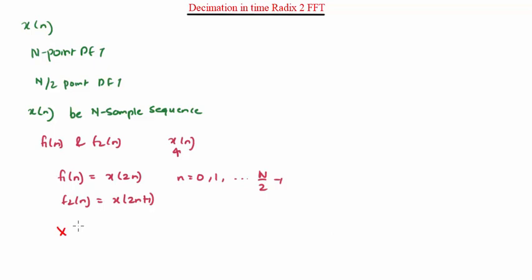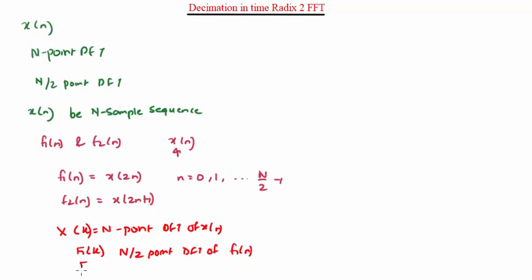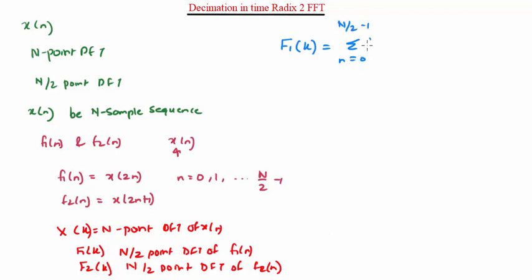Let X(k) represent the N-point DFT of x(n), F1(k) represent the N/2-point DFT of f1(n), and similarly F2(k) the N/2-point DFT of f2(n). By definition of DFT, the N/2-point DFTs are given by: F1(k) = summation from n=0 to N/2-1 of f1(n) * W_N/2^(kn), and F2(k) = summation from n=0 to N/2-1 of f2(n) * W_N/2^(kn).